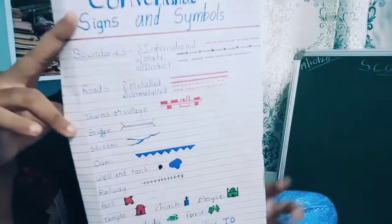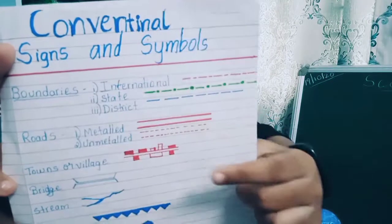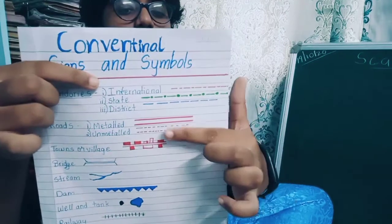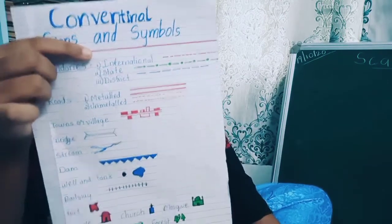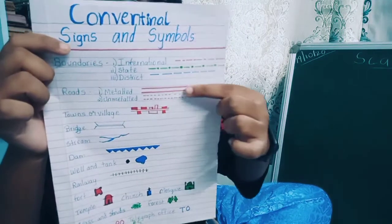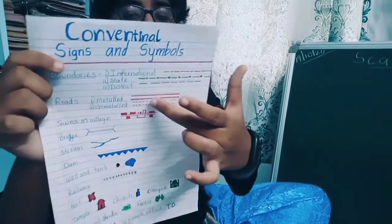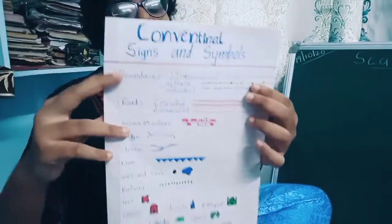The colors used for boundaries are not fixed rules — black can also be used on maps. Next come roads: metalled and unmetalled. Metalled roads are plain roads like highways. Unmetalled roads are found in villages, made of mud and stones. Metalled roads are shown with two parallel straight lines. Unmetalled roads are shown with two parallel dotted lines.